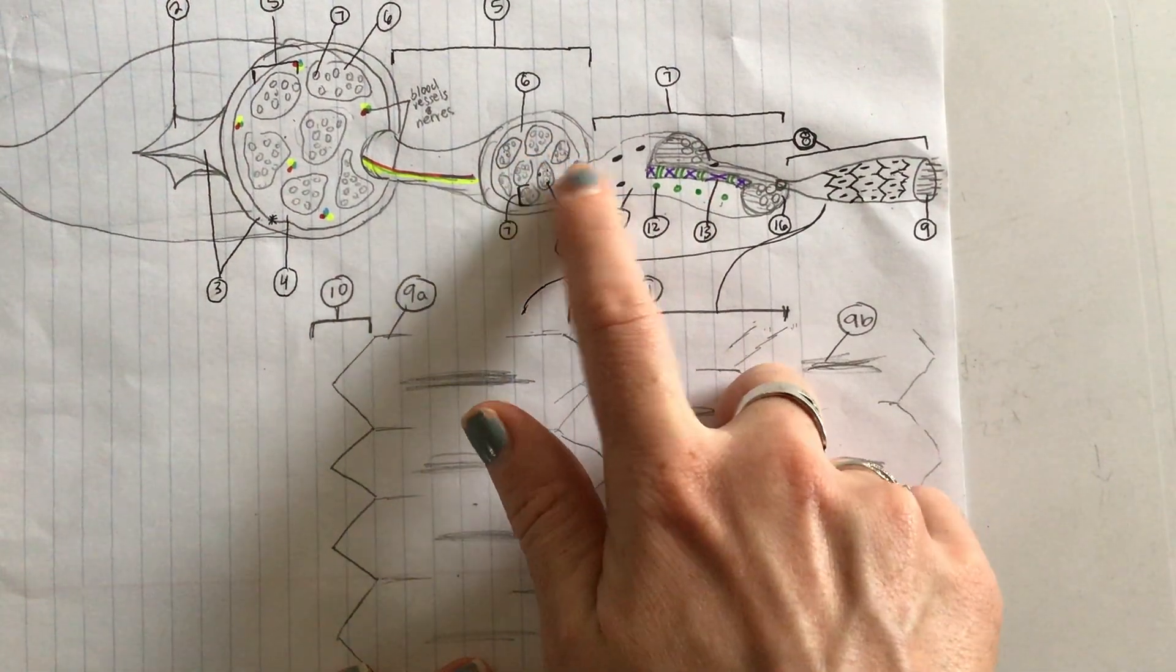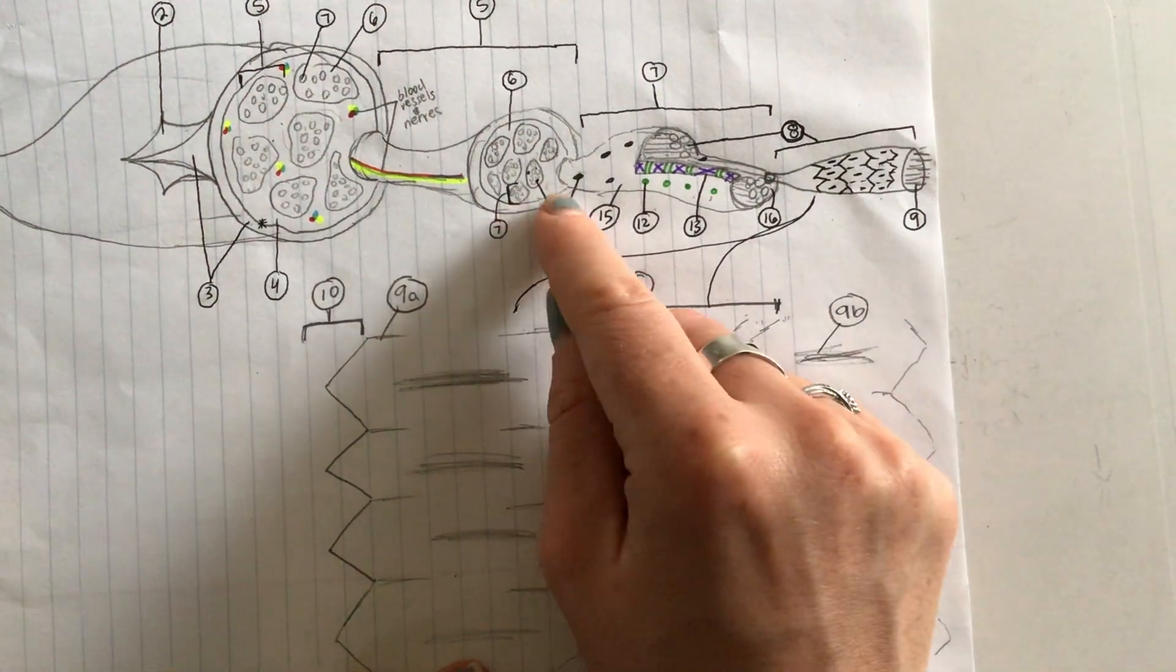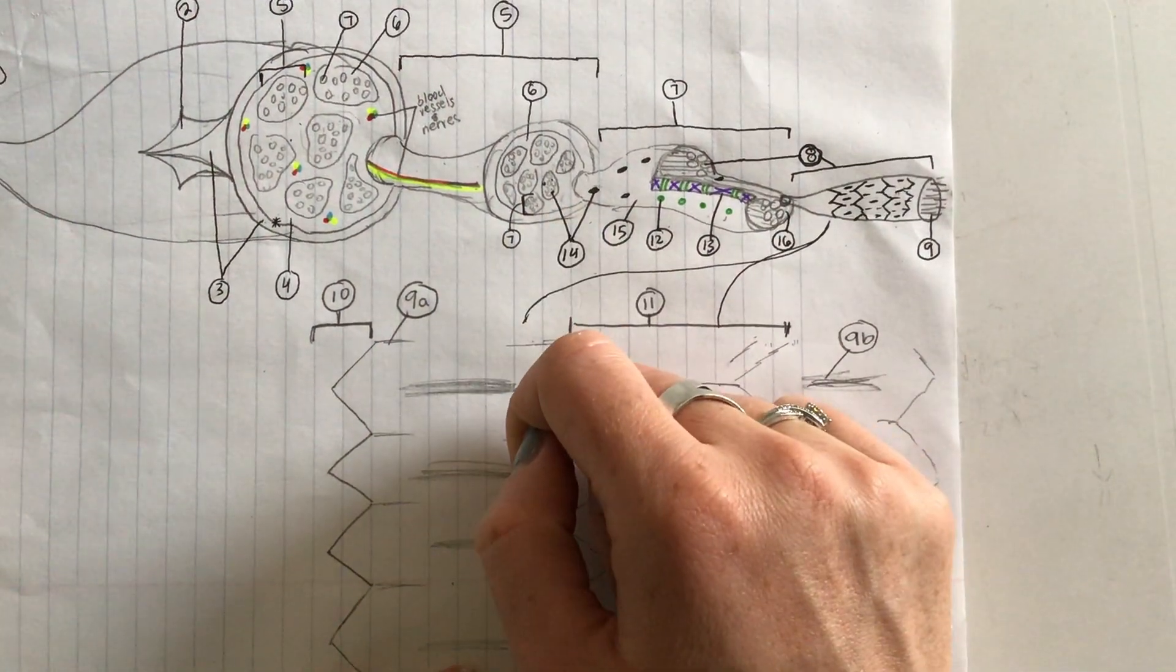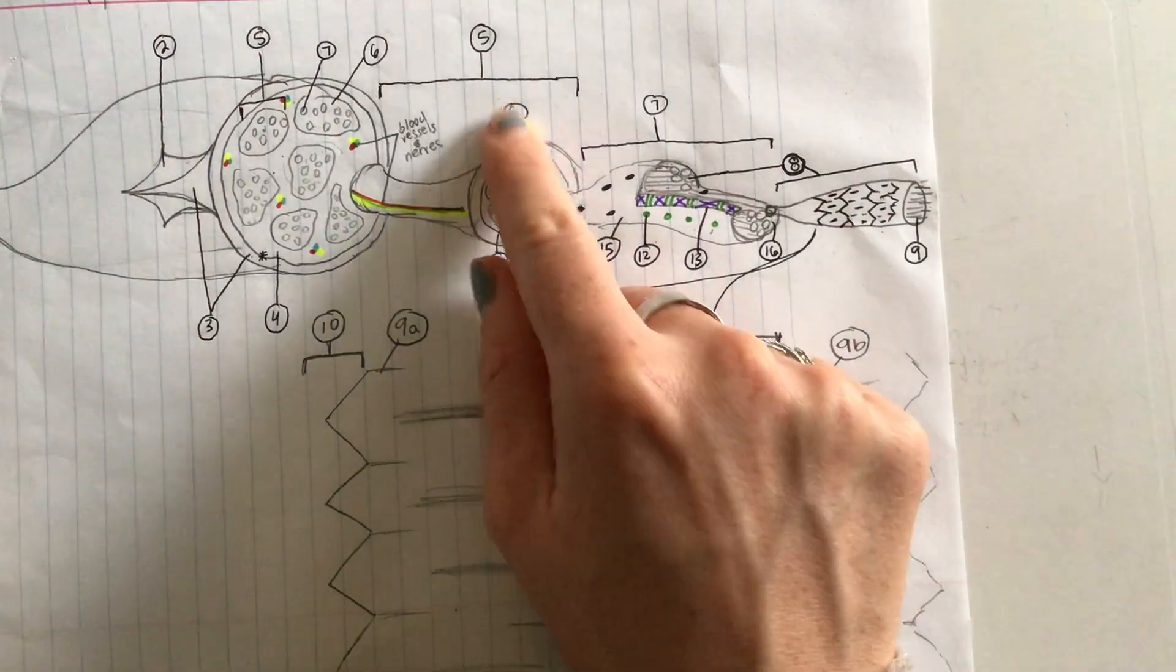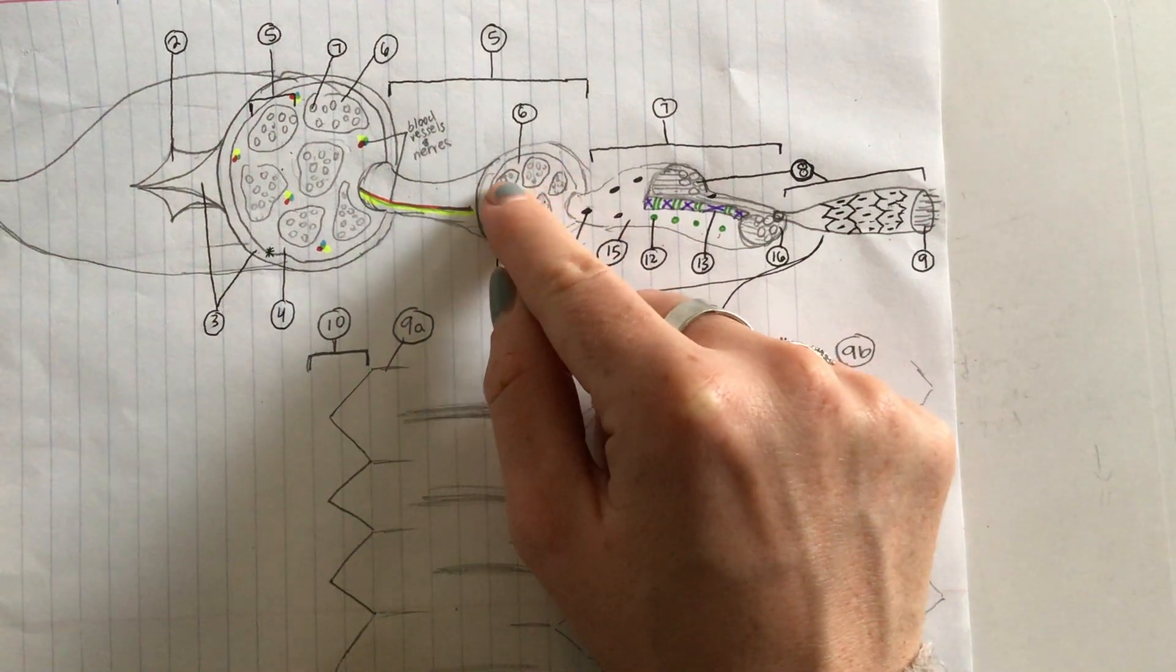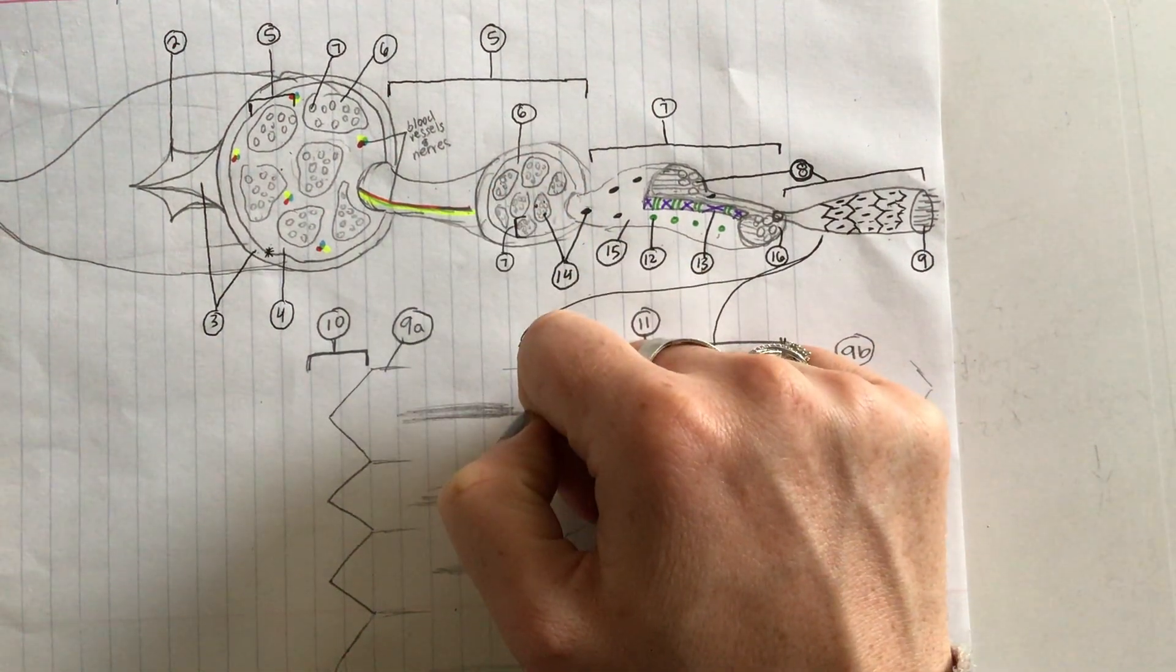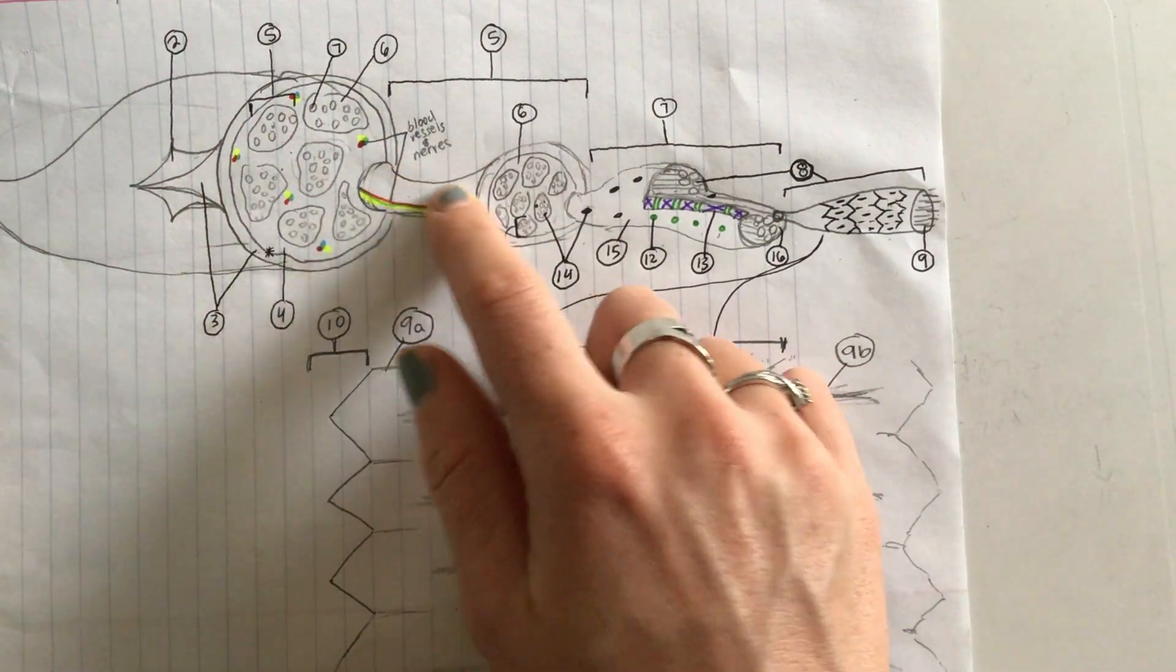We see a bunch of muscle fibers here, and each muscle fiber is surrounded by a layer of connective tissue. What layer of connective tissue is number 6 labeling surrounding these muscle cells? It is the endomysium.